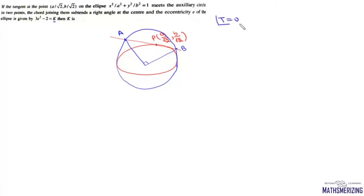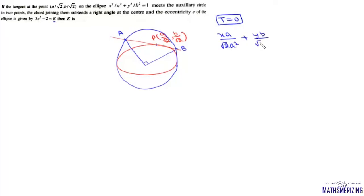Once we have this point, we know the equation of the tangent is given by T = 0. So this equation will be (x·a/√2)/a² + (y·b/√2)/b² = 1, which simplifies to x/(√2·a) + y/(√2·b) = 1.